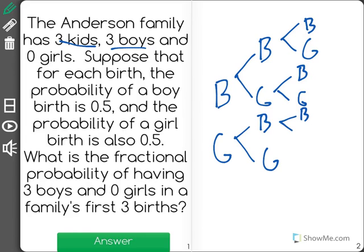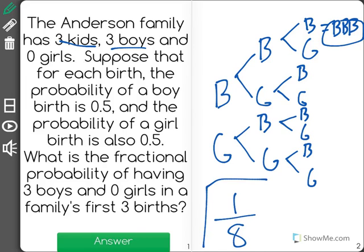So when we have all of these listed, we could see that there is only one possible outcome that has three boys out of eight total. So there is a one-eighth probability of having three boys and zero girls.